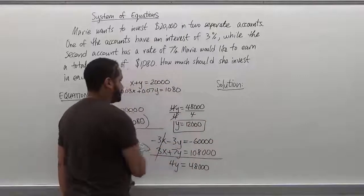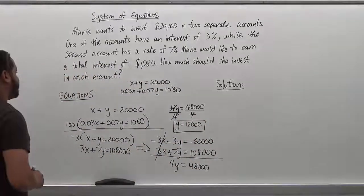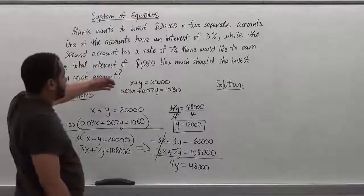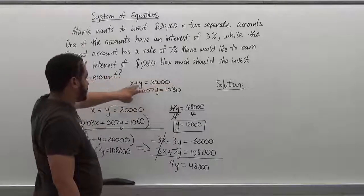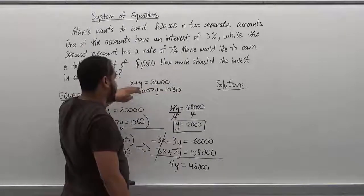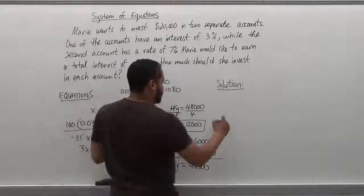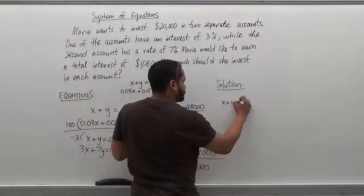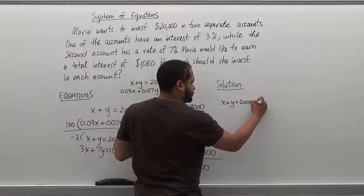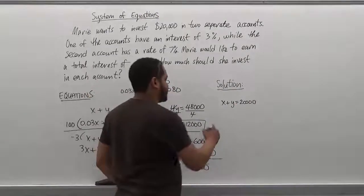So we have the y value. And what we need now is the x value. And we have an equation here. We're going to use the top equation because it's the simplest one to solve. So we know x plus y equals 20,000. The solution for y is 12,000. So we have x plus 12,000 equals 20,000.